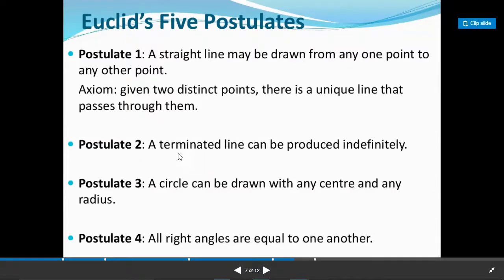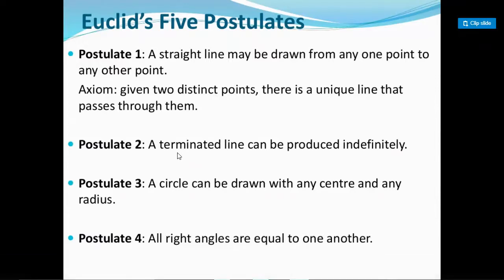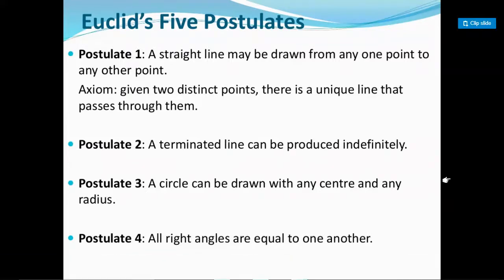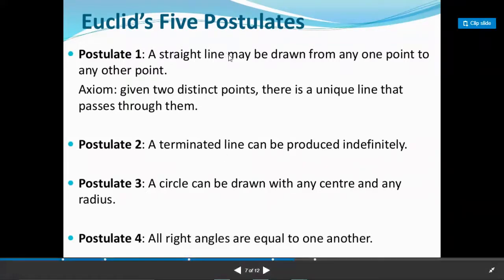Next is postulate number two: a terminated line. What does terminated mean? In the first chapter, in the number system, you have heard about the term terminated. Terminated means which is finished - you have a line of fixed length. It can be produced indefinitely. This means if we are talking about a line, it can be extended in both directions. So if a line segment of three centimeters is given, you can extend it in both directions. The second postulate is: a terminated line can be produced indefinitely in both directions.